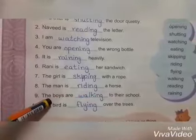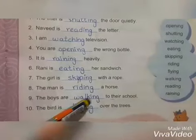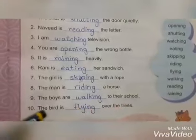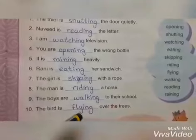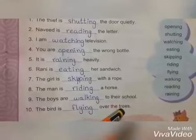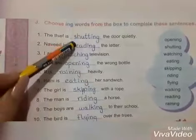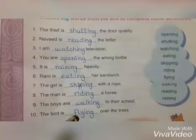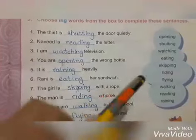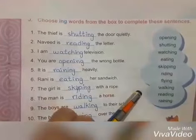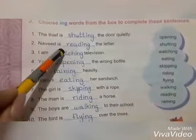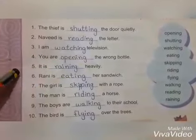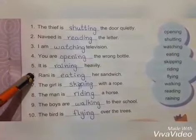Number nine: 'The boys are walking to their school.' Number ten: 'The bird is flying over the trees.' So all the verbs are showing the action, and by adding -ing with the verb we are showing that the actions are taking place now.